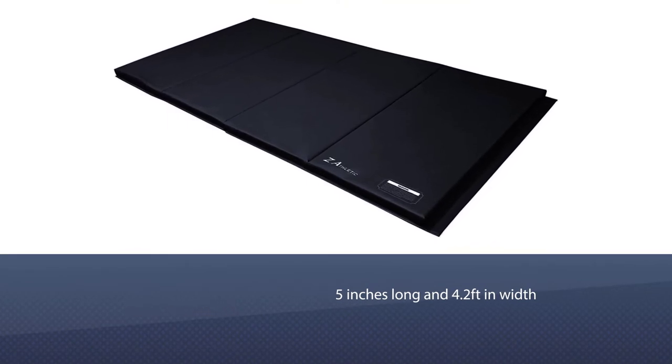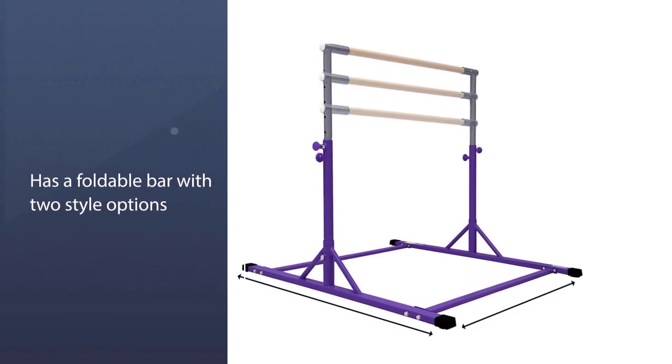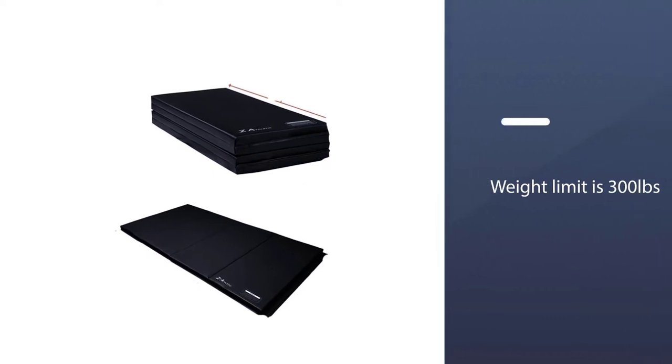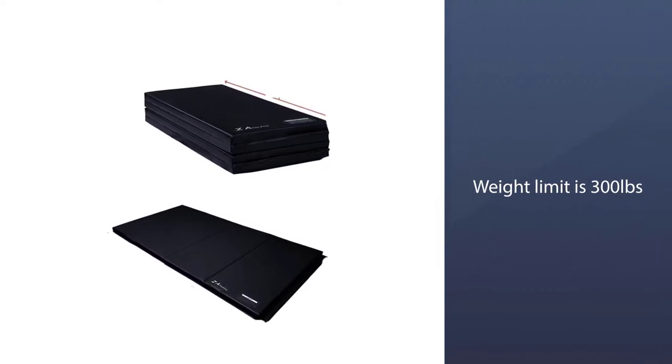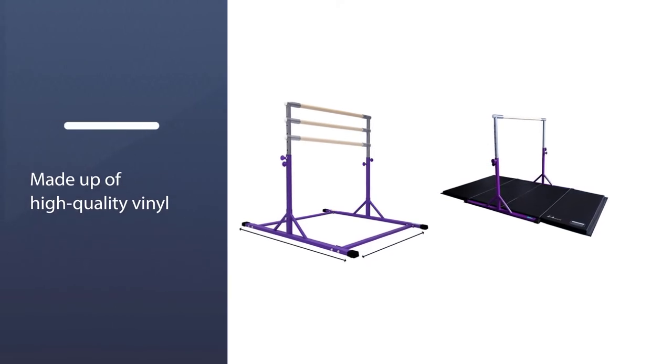If you want to do a pull down, then the weight limit is 300 pounds, and the usage limit is 120 pounds. It is made up of high quality vinyl, 18 ounces covered with polyethylene. This bar offers gymnastics up to 3 to 4 levels.